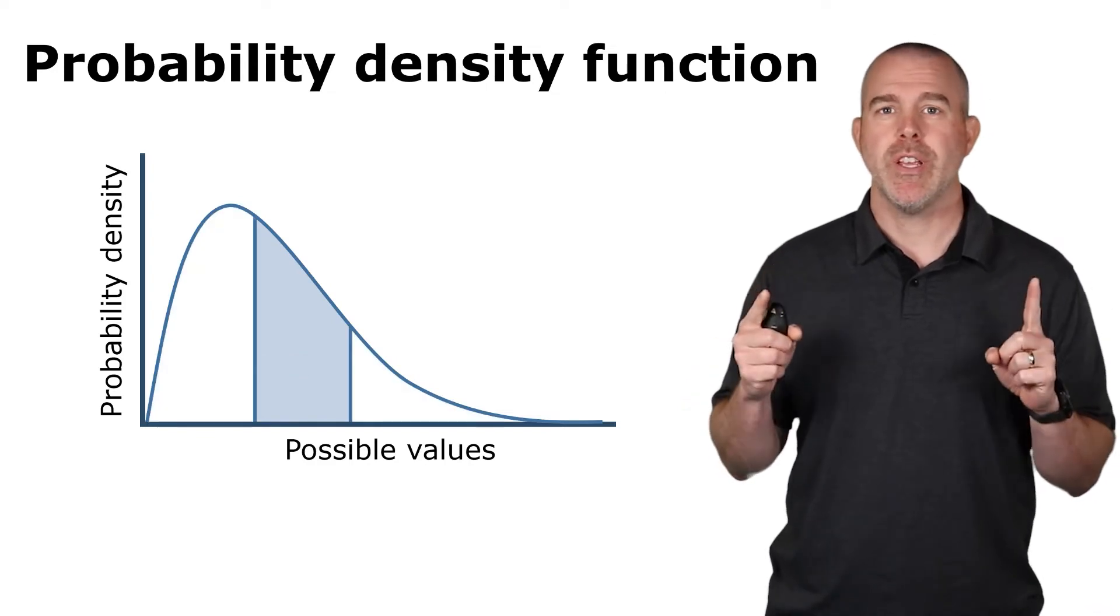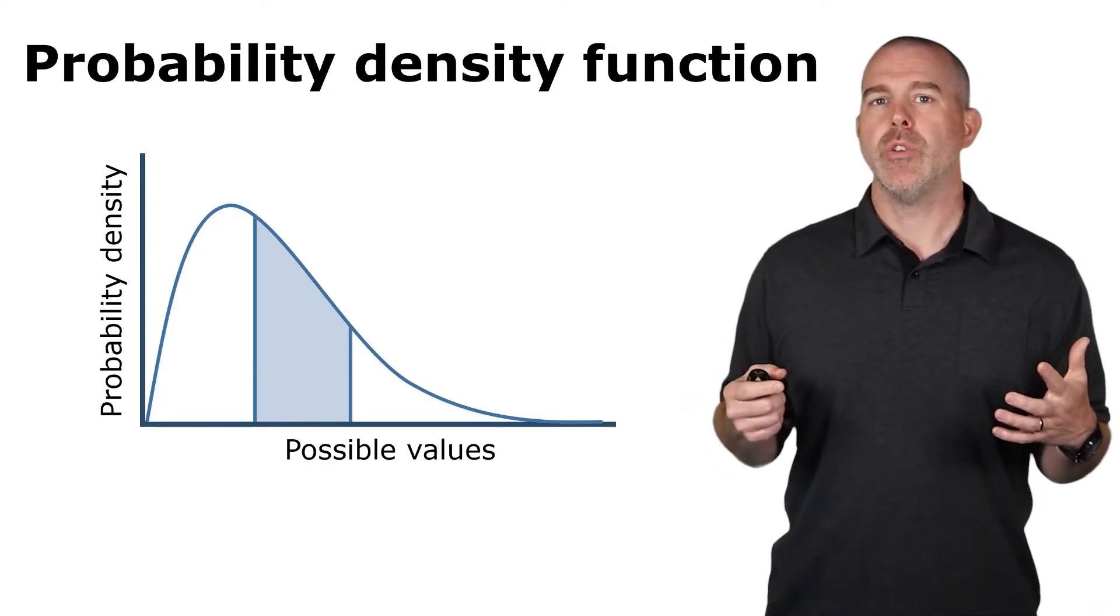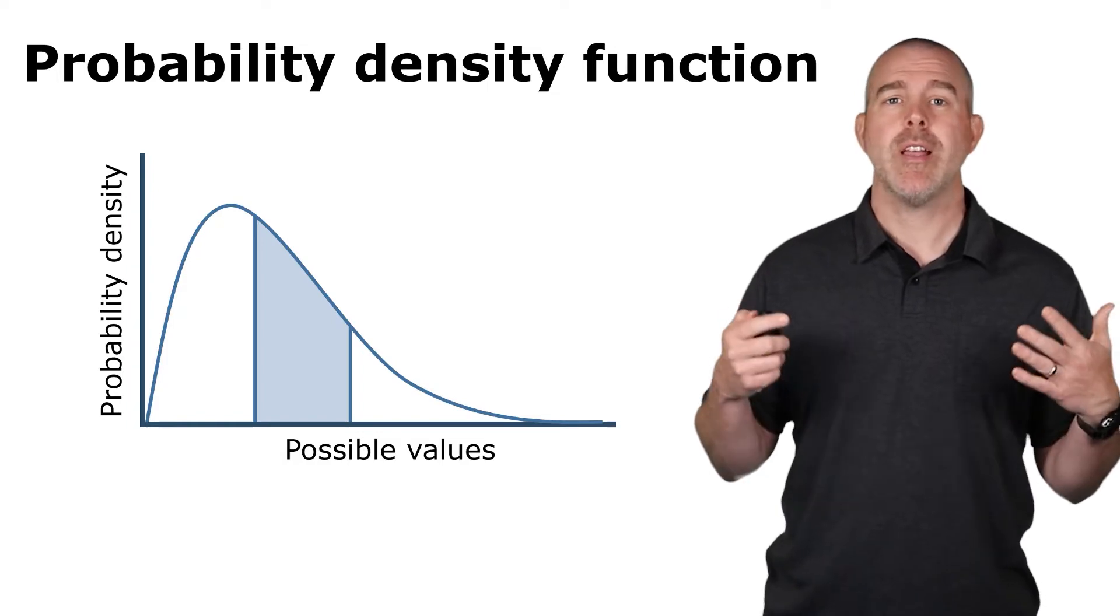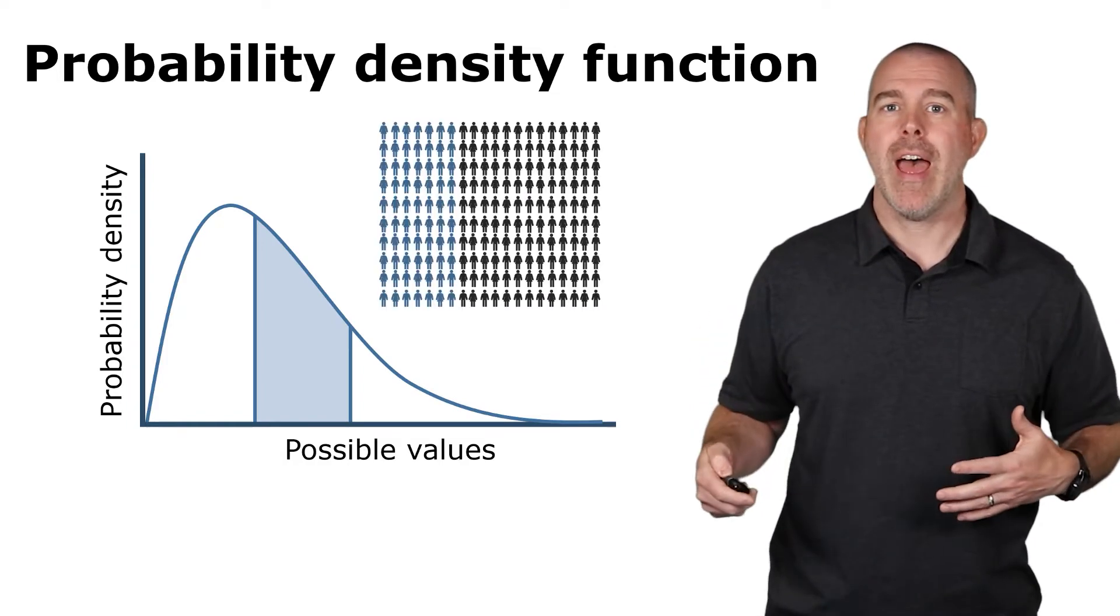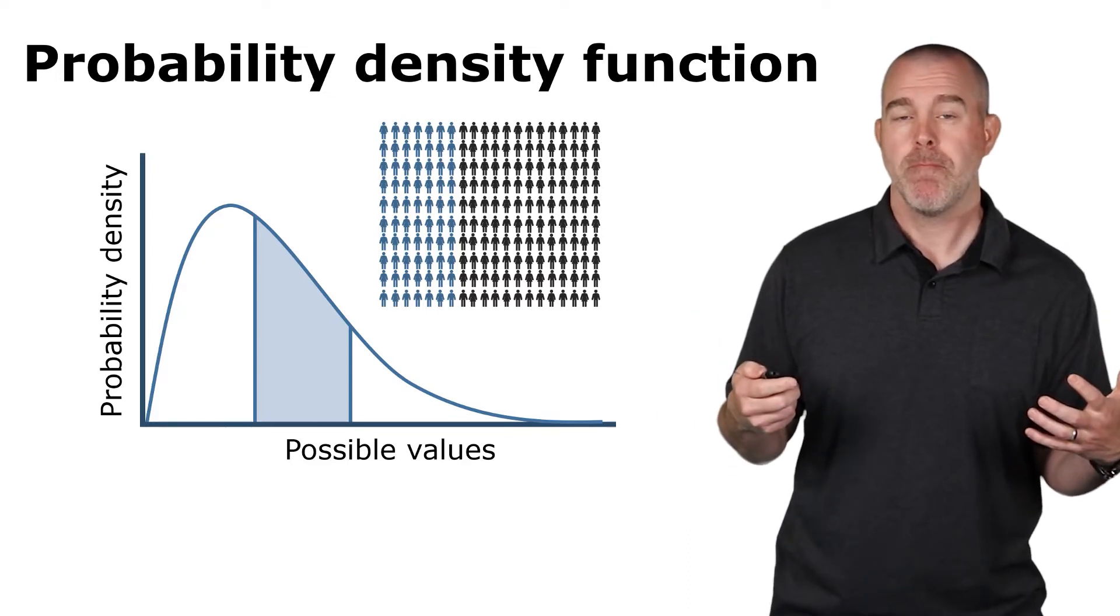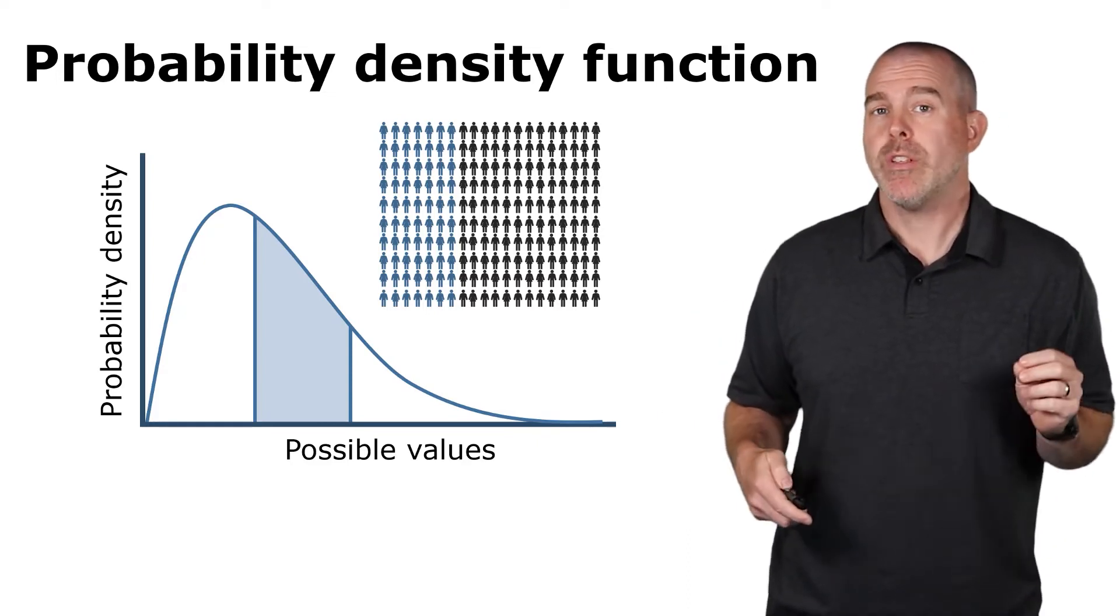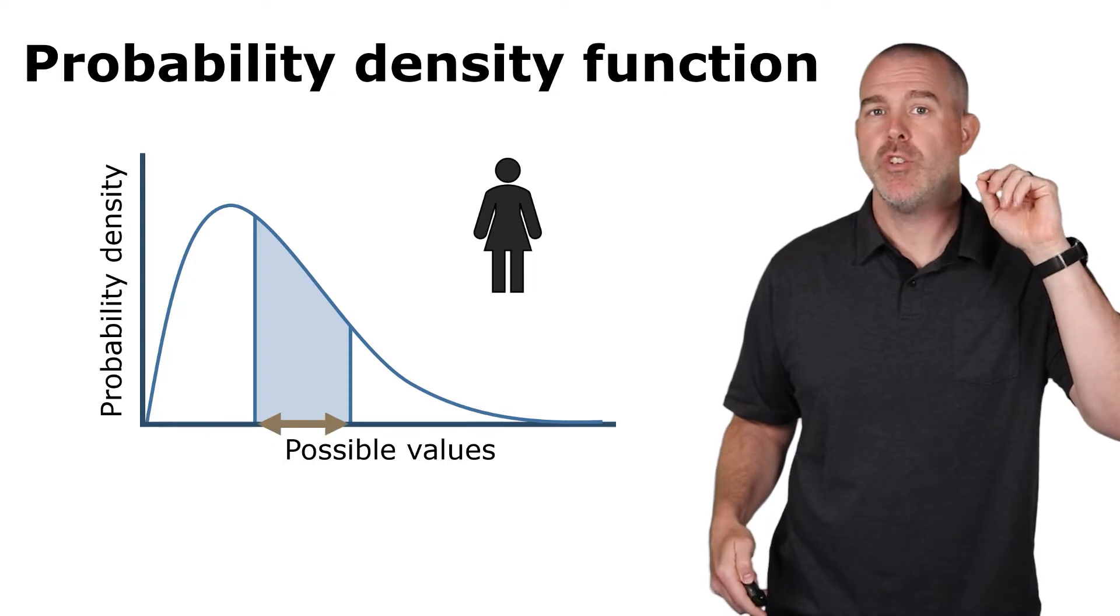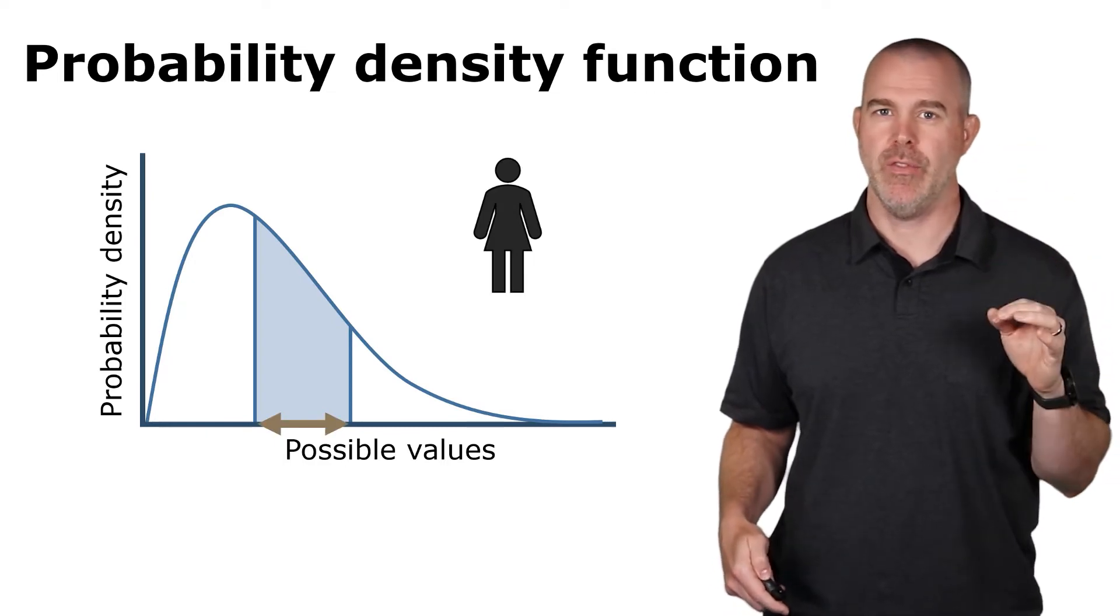Suppose we look at a particular interval. There's a couple of different ways to interpret that. One is you get some number. It could mean that the proportion of all individuals is represented by that area. Or it could be what is the probability that one individual is in that particular interval.